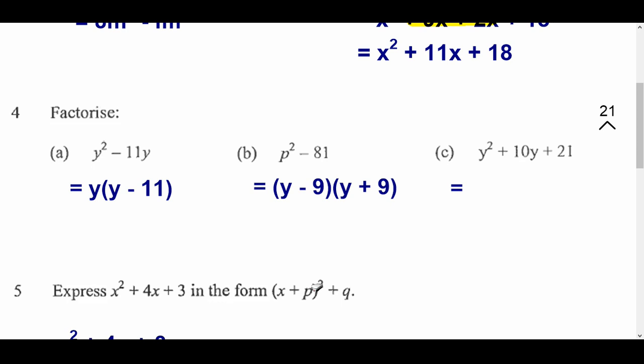Right, for the last one, what you need to do is, again, it's double brackets, but you tend to focus on the 21 at the end. So, we'll put y and y at the start of our brackets. And the numbers at the end need to multiply to make 21. They must. They must multiply to make 21.